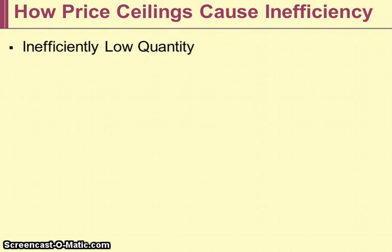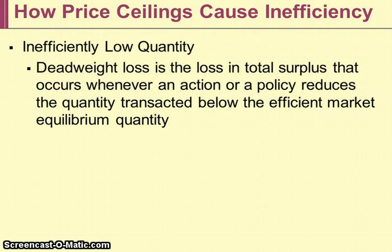This price ceiling causes inefficiency. First, there will be an inefficiently low quantity of apartments available and rented due to the price restriction — the number rented each month decreases from the equilibrium quantity, creating a shortage. Because of this, deadweight loss occurs. Deadweight loss is the loss in total surplus that occurs whenever a policy reduces the quantity transacted below the efficient market equilibrium quantity.